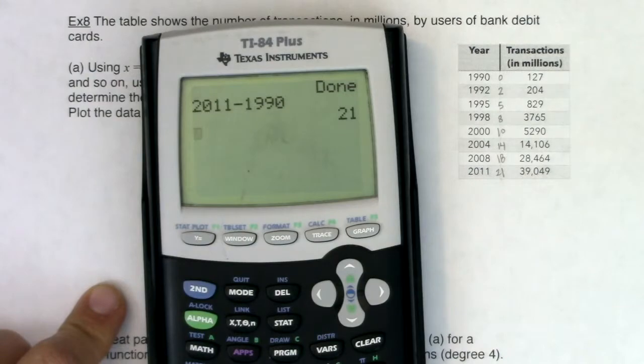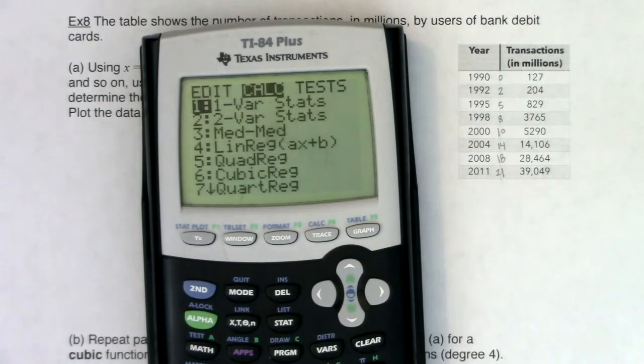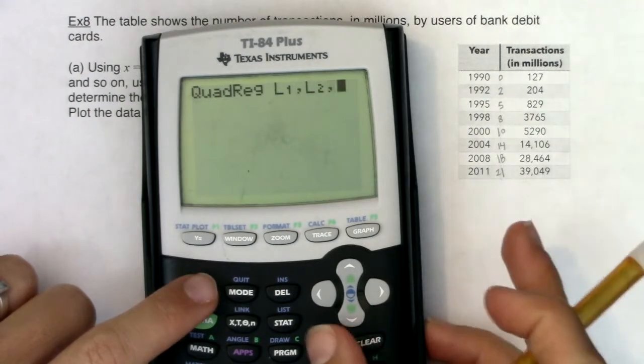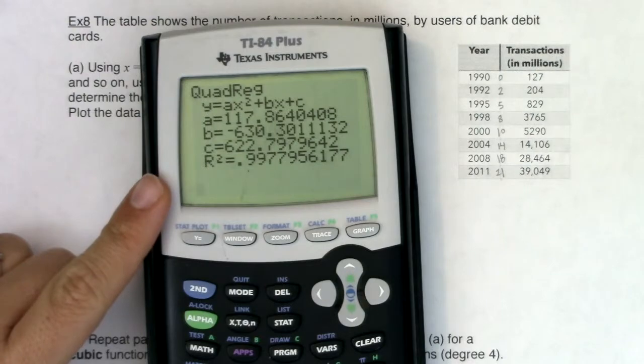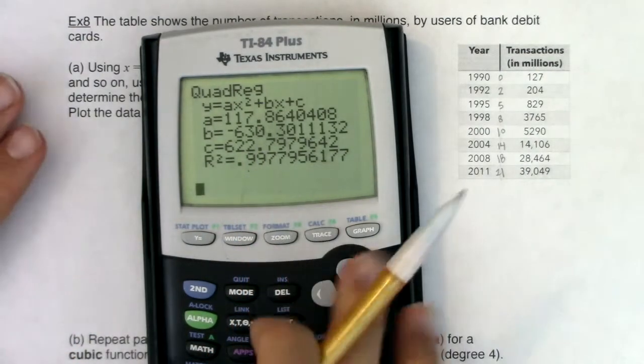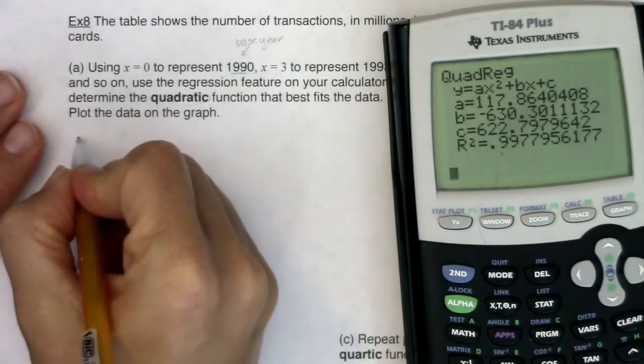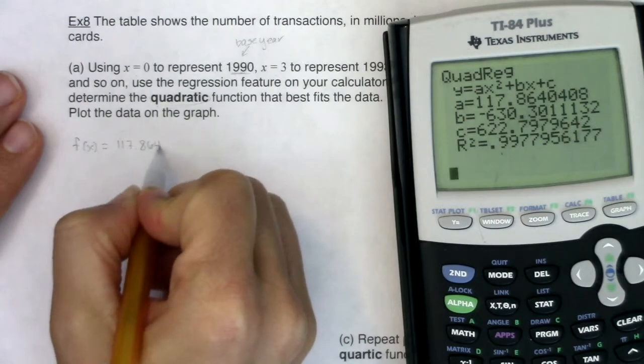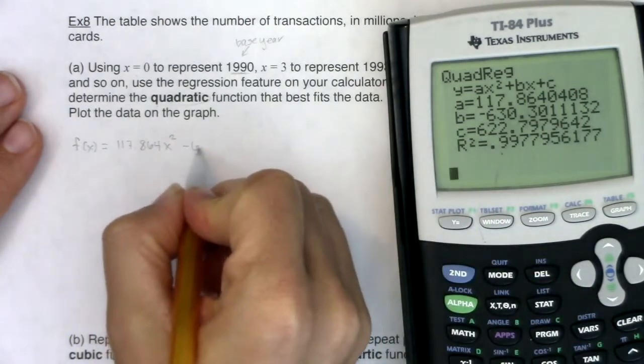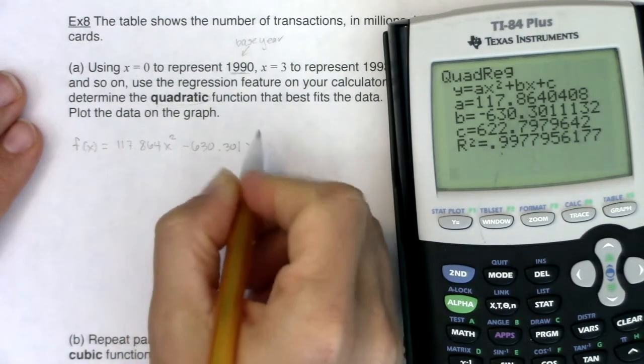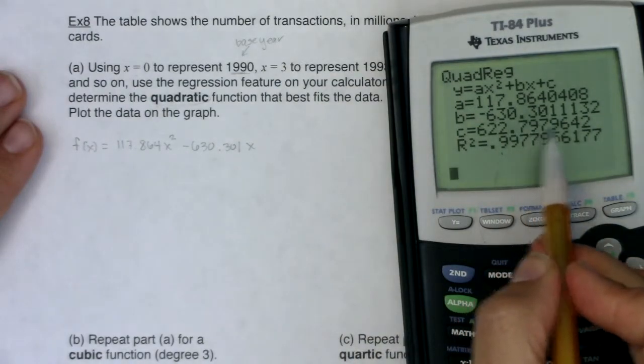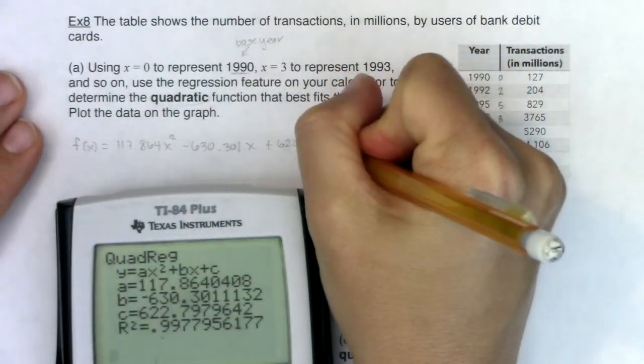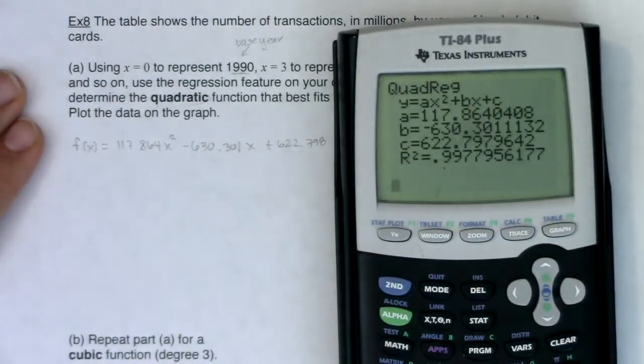If we want to run quadratic regression, we've done this before. We're going to go stat, calc. Quadratic regression is down here at five. So I'm going to do L1 comma L2 comma Y1. And there's that quadratic model. I go three decimals. I'm going to move this over to the side so you can see the numbers.